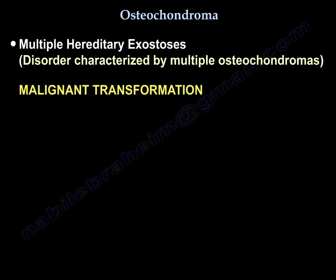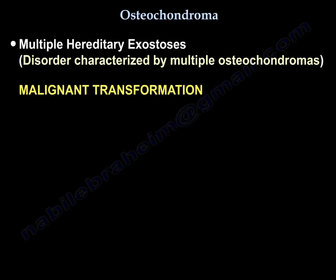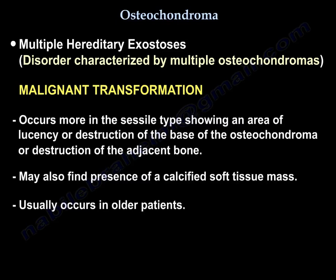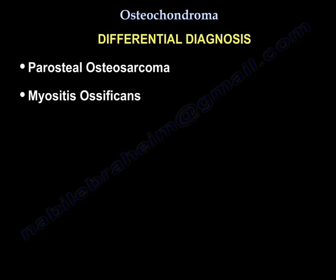Malignant transformation is suggested clinically by new pain and sudden increase in size, resulting in low-grade chondrosarcoma, usually occurring in the scapula and pelvis. On MRI, the cartilage cap will appear bright. It occurs more in the sessile type. Imaging may show an area of lucency or destruction at the base of the osteochondroma, destruction of adjacent bone, or a calcified soft tissue mass. It usually occurs in older patients. Differential diagnoses include parosteal osteosarcoma and myositis ossificans.